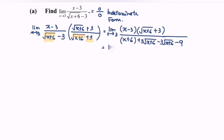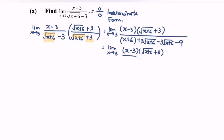Finally, minus 9. Next, what we have to do is simplify the situation, and we will have the limit as x approaches 3: (x minus 3) multiplied by (square root of x plus 6, plus 3) over (x plus 6 minus 9).